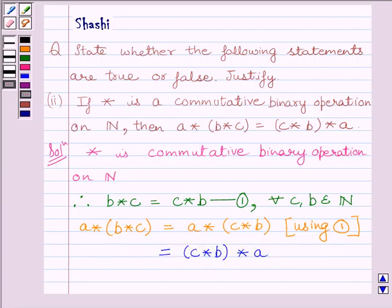We are given in the question that star is a commutative binary operation on N. Here, this is our a and this bracket is our b. So a star b must be equal to b star a. That's what we have done here.